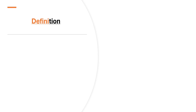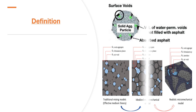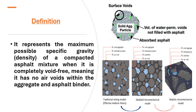Definition: It represents the maximum possible specific gravity and density of a compacted asphalt mixture when it is completely void-free, meaning it has no air voids within the aggregate and asphalt binder.